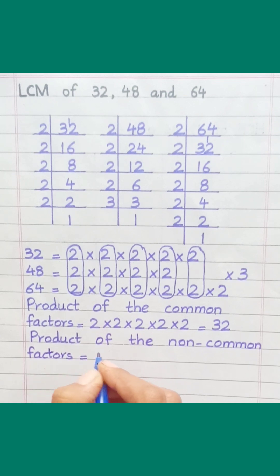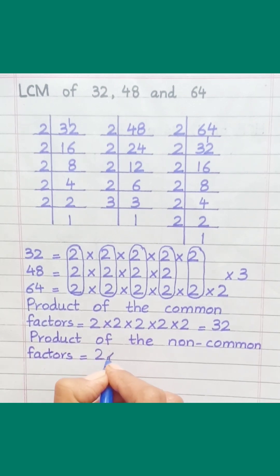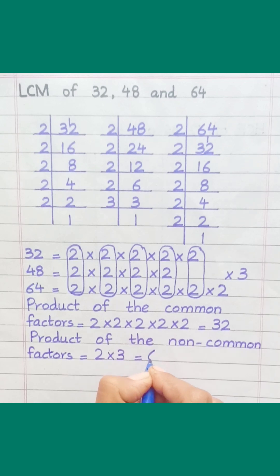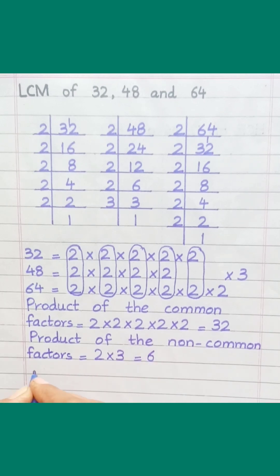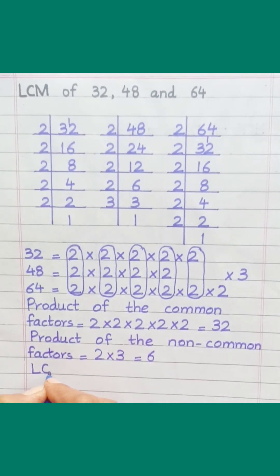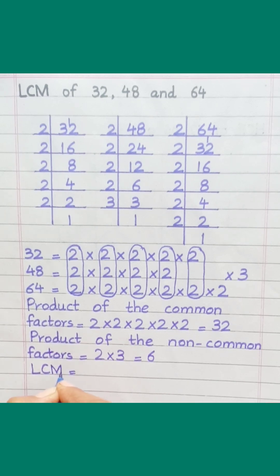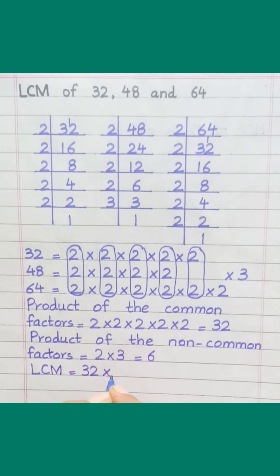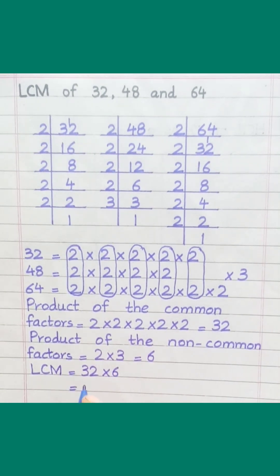Product of the non-common factors equals 2 x 3 equals 6. LCM equals 32 x 6 equals 192.